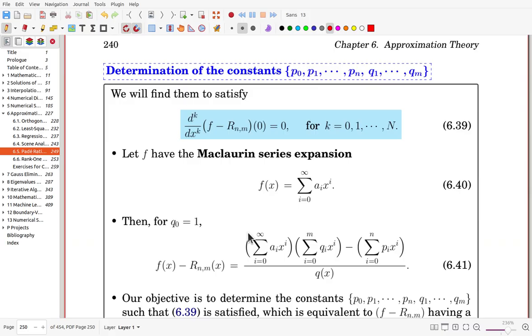For the form of Padé rational function, now we have to decide the coefficients p0 to pn and q1 to qm. There are capital N plus 1 constants to be determined.